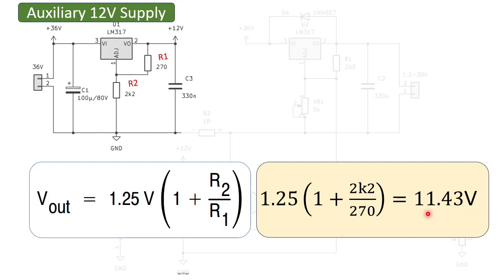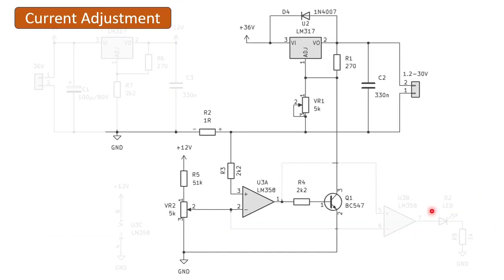Let's go to the final part, the current adjustment. In this part, a LM358 opamp controls the current. To do this, it needs to know the current and the current limit. The current is measured by this shunt resistor of 1 ohm. The current limit is set by this 5k potentiometer.